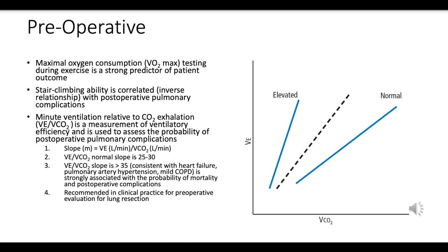Minute ventilation relative to CO2 exhalation, or VE divided by VCO2, measures ventilatory efficiency — the relationship between the amount of air ventilated (VE) and the amount of carbon dioxide produced (VCO2). The formula is: slope (M) = VE in liters per minute divided by VCO2 in liters per minute. A VE to VCO2 slope of 25 to 30 is considered normal.